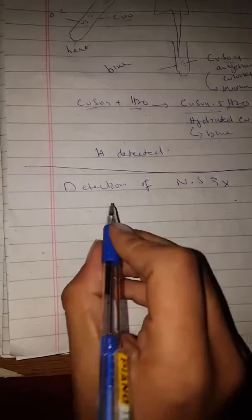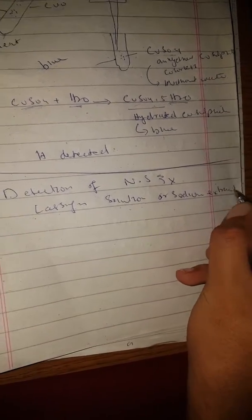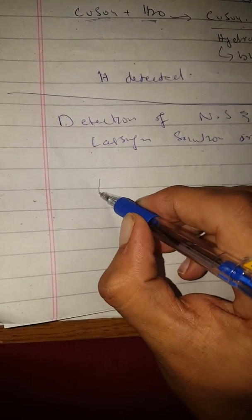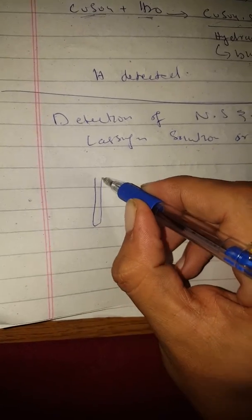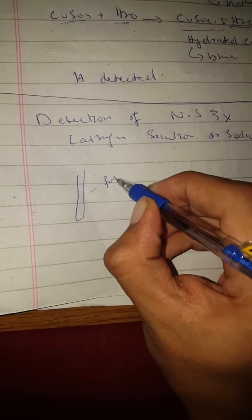My topic is Detection of Nitrogen and Halogen. I am going to use a solution for this. For this solution I am going to use a test tube — this diameter is lower than the normal test tube — we use a fusion tube.